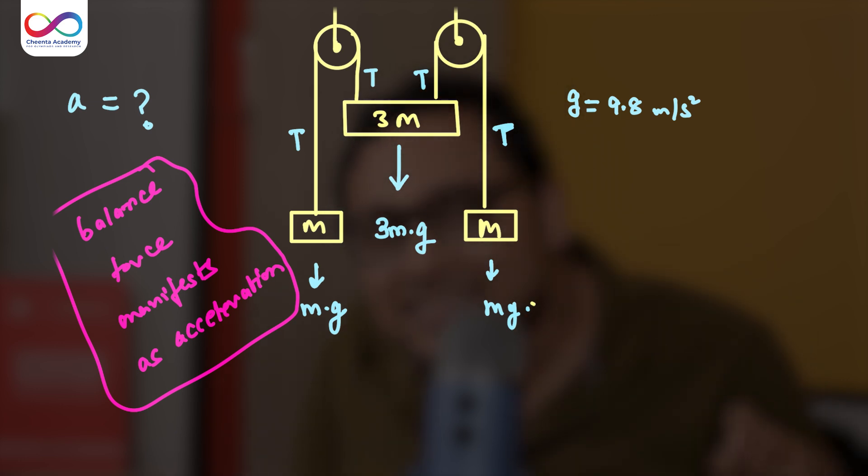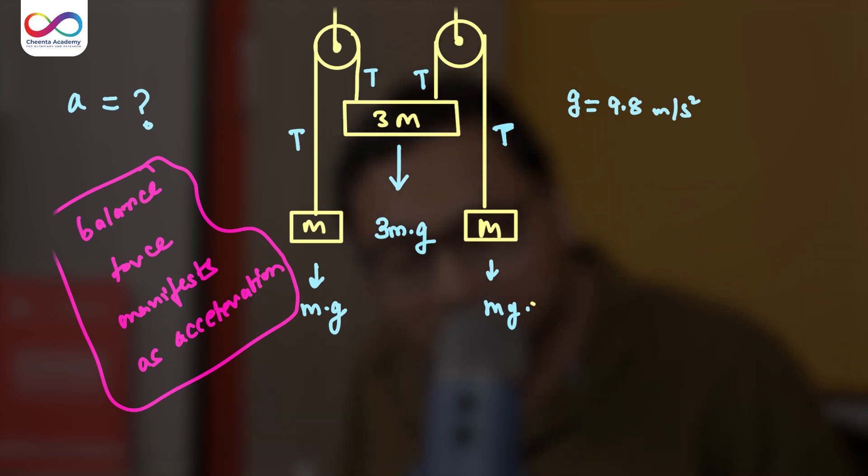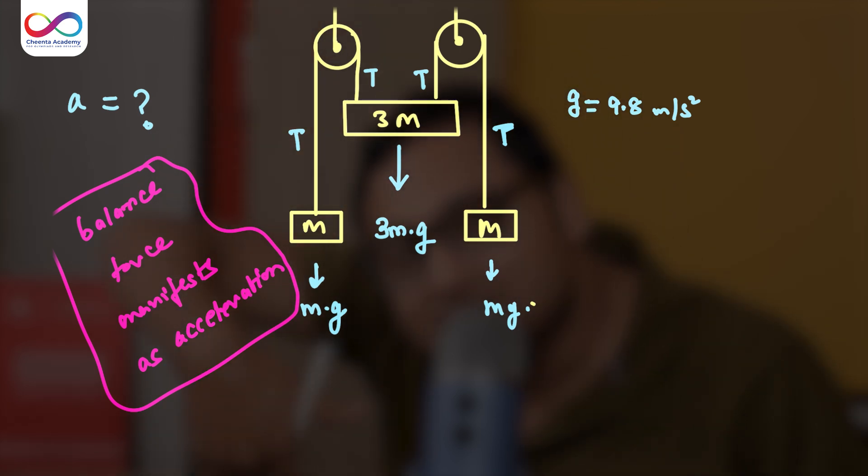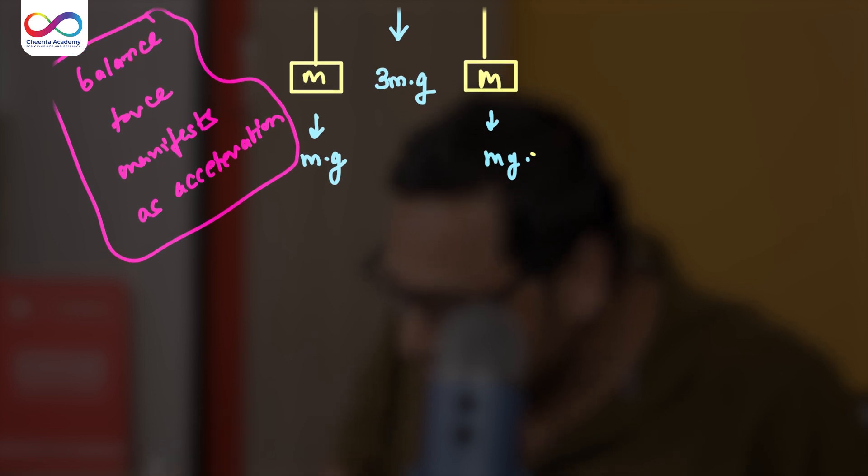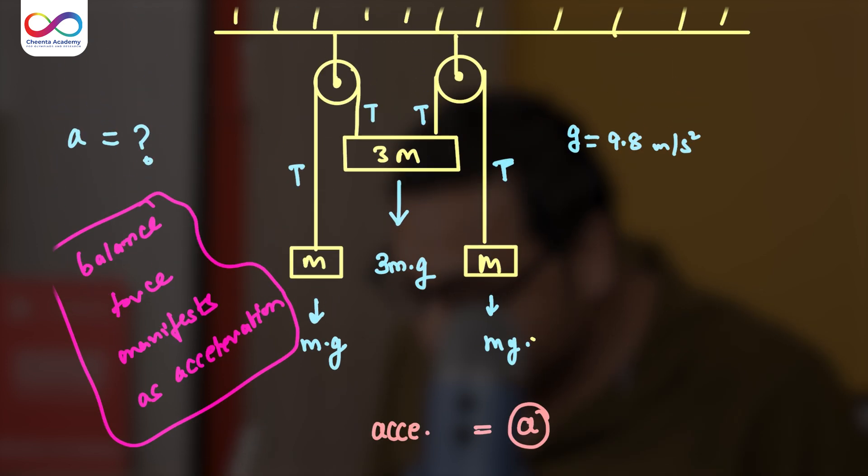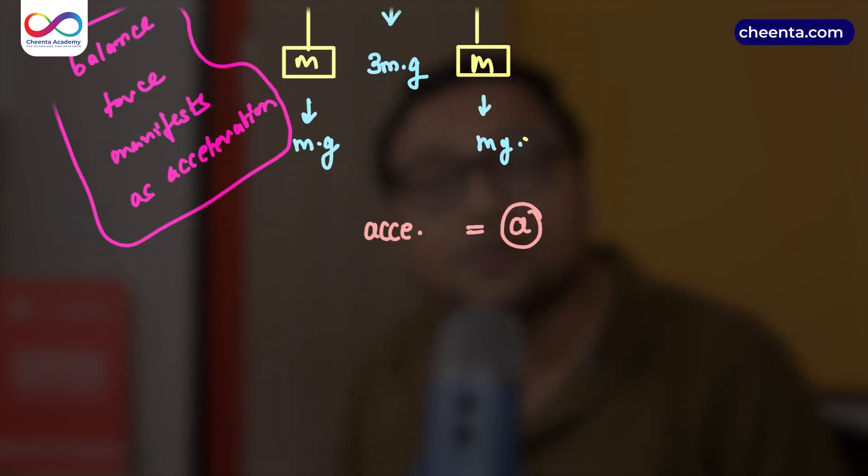Forces appear in nature as acceleration. You see the acceleration, you don't see the force. So here, since M is accelerating upward and 3M is accelerating downward, suppose the acceleration here is A. That's exactly what we want to find out. What is the acceleration? Suppose the acceleration is A.